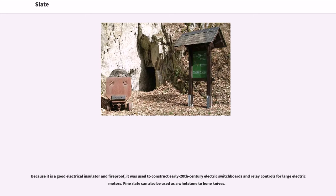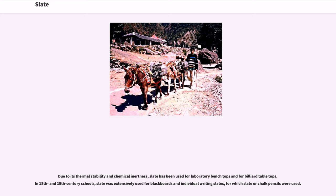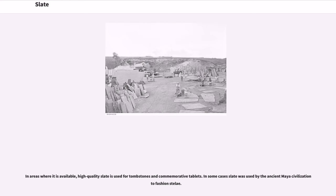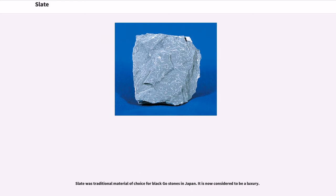Because it is a good electrical insulator and fireproof, slate was used to construct early 20th century electric switchboards and relay controls for large electric motors. Fine slate can also be used as a whetstone to hone knives. Due to its thermal stability and chemical inertness, slate has been used for laboratory bench tops and for billiard table tops. In 18th and 19th century schools, slate was extensively used for blackboards and individual writing slates, for which slate or chalk pencils were used. In areas where it is available, high-quality slate is used for tombstones and commemorative tablets. In some cases slate was used by the ancient Maya civilization to fashion stele. Slate was the traditional material of choice for black go stones in Japan, and is now considered to be a luxury.